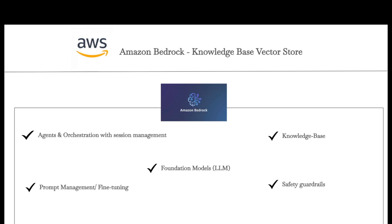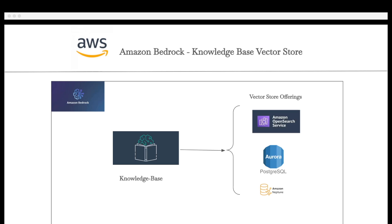Responsible AI and so forth — and knowledge base is just one of those capabilities. In simple terms, it's a vector store offering on AWS Cloud where you can provide contextual information from your own data sources to the foundation models and your agents, in order to generate more relevant and accurate responses — which is basically the definition of RAG. While working with knowledge bases you can choose between three vector store offerings: OpenSearch Service, which we'll use in this demo; a PostgreSQL vector store on AWS Aurora; and Neptune Analytics, a memory-optimized graph database ideal for analytical use cases.